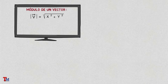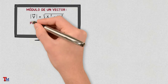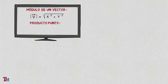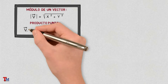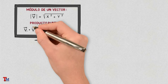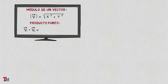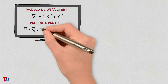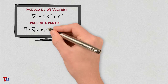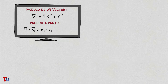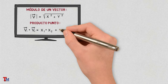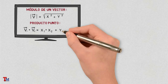The next topic is to remember the dot product or scalar product between two vectors from the Cartesian coordinates of the vector, which is defined as the multiplication of the first component of both vectors plus the multiplication of the second component of both vectors.